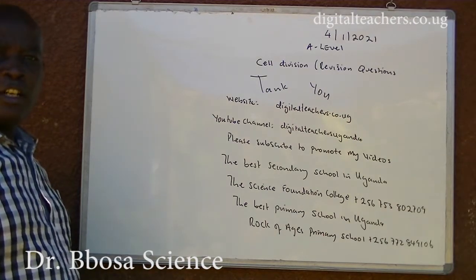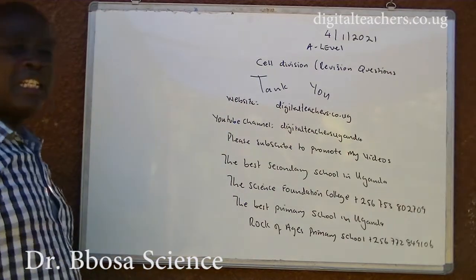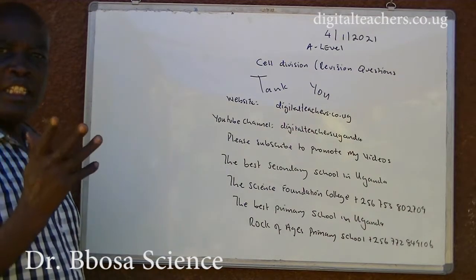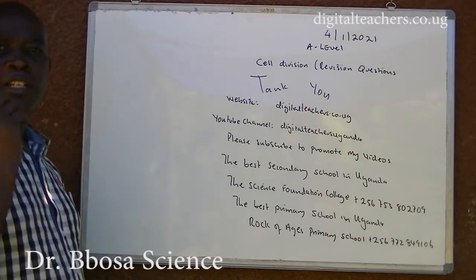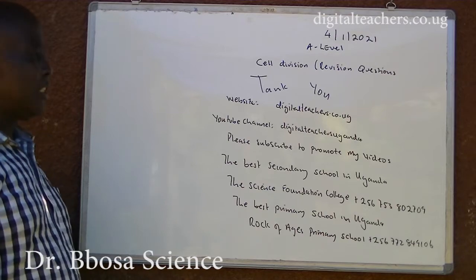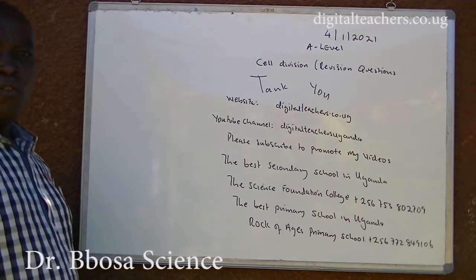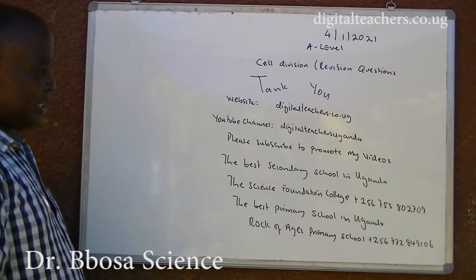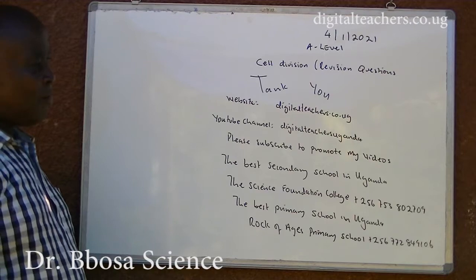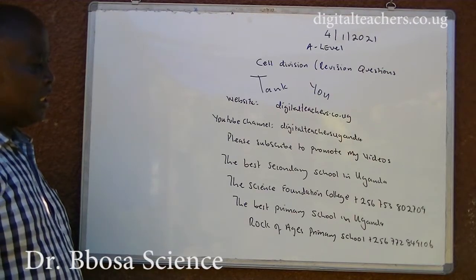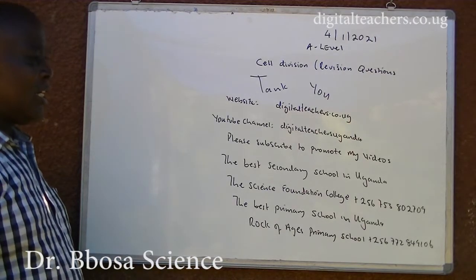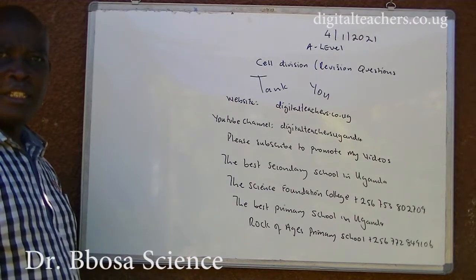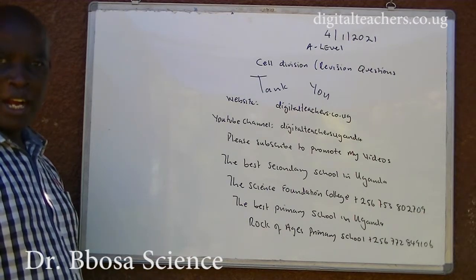Thank you so much for listening to this video. Our website is digitalteachers.co.ug. Here find notes, examples, exams and marking guides in physics, chemistry, biology, math and primary subjects. Visit our YouTube channel for related videos in physics, chemistry, biology, math and primary subjects. Please subscribe to promote my videos. Subscription is free. The best secondary school in Uganda is the Science Foundation College. The best primary school in Uganda is Locke of Ages Primary School, Chiwanga, Mokono District, Uganda.